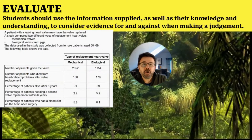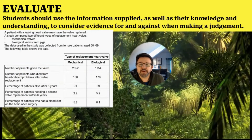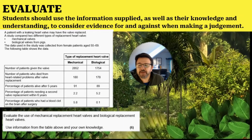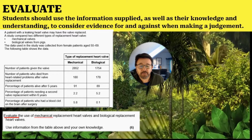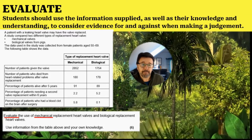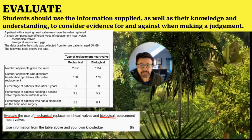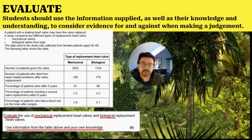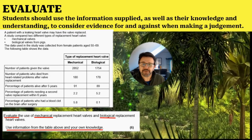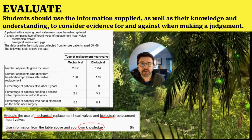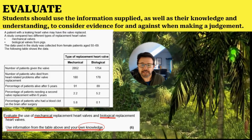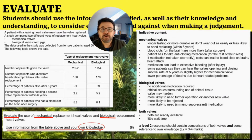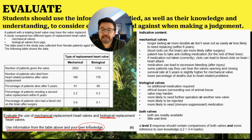This second example is not just about pros and cons. They give you some information in a table, and the question says evaluate the use of mechanical replacement heart valves and biological replacement heart valves — use the information from the table above, but you also have to include your own knowledge from your revision.